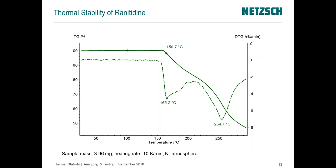As another example, ranitidine is a pharmaceutical ingredient for the control of gastric acid production, heartburn, or treatment of reflux diseases. You can see the measurement parameters given below. The result shows the TG result over temperature, and the dashed line refers to the rate of mass change. Since we are especially interested in thermal stability, the material is not changing its mass up to about 160°C, and then we have a two-step decomposition mechanism.